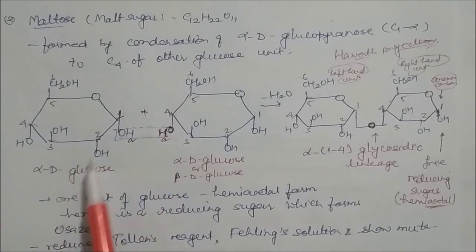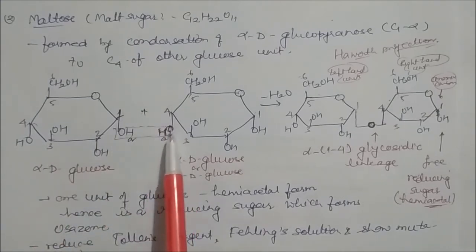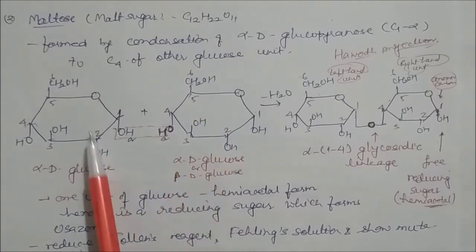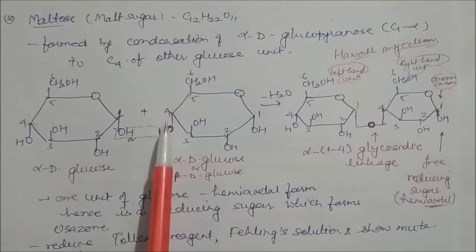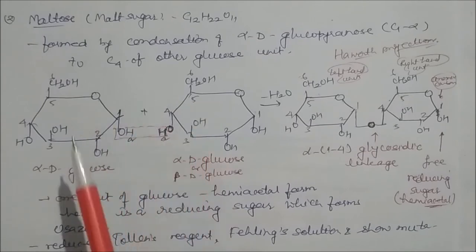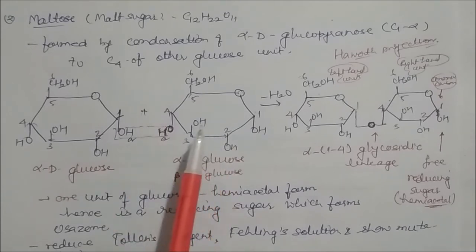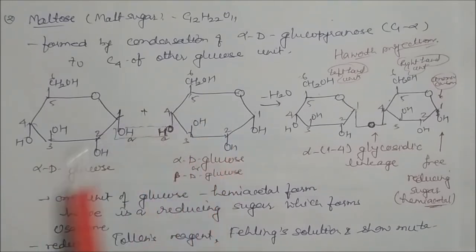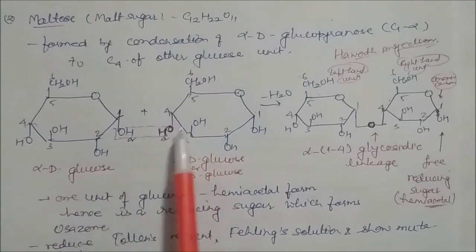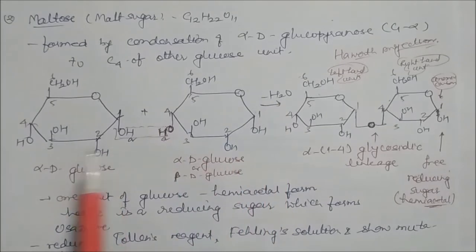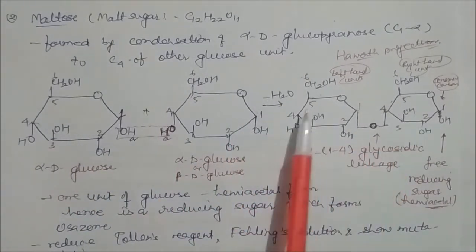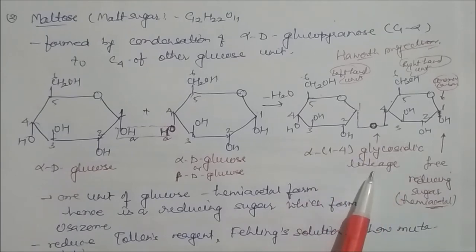In maltose, the first glucose unit has alpha-D configuration (OH down at anomeric carbon). In Haworth projections, the second glucose subunit can be alpha-D or beta-D — either is acceptable for maltose, unlike sucrose which strictly requires alpha-D glucose and beta-D fructose. The first subunit must be alpha, and the glycosidic bond formed is called the alpha-1,4 glycosidic linkage.